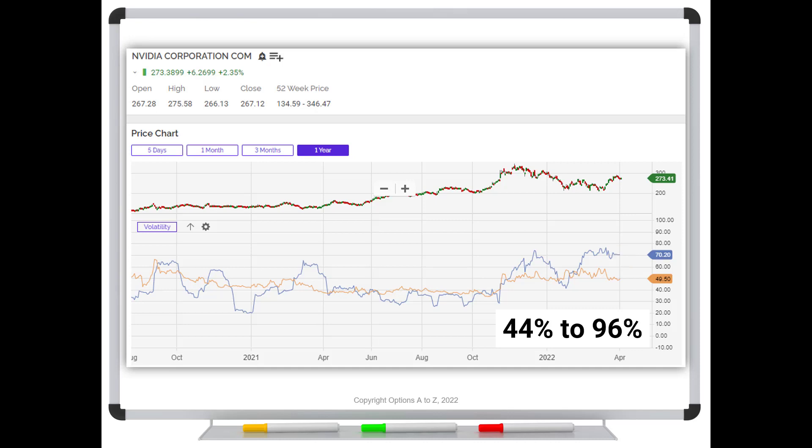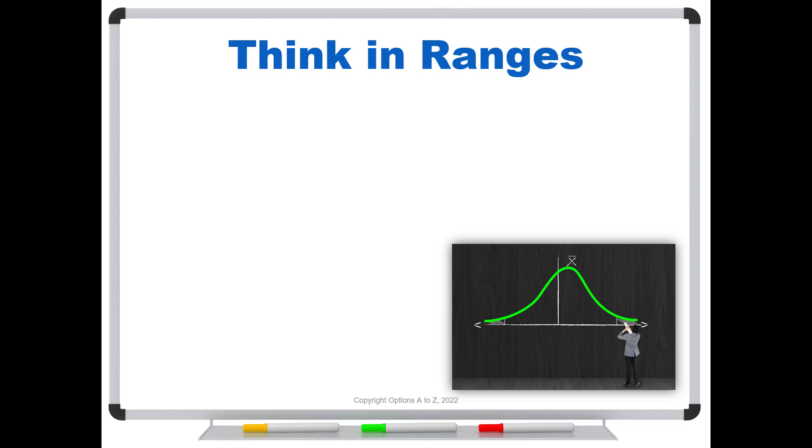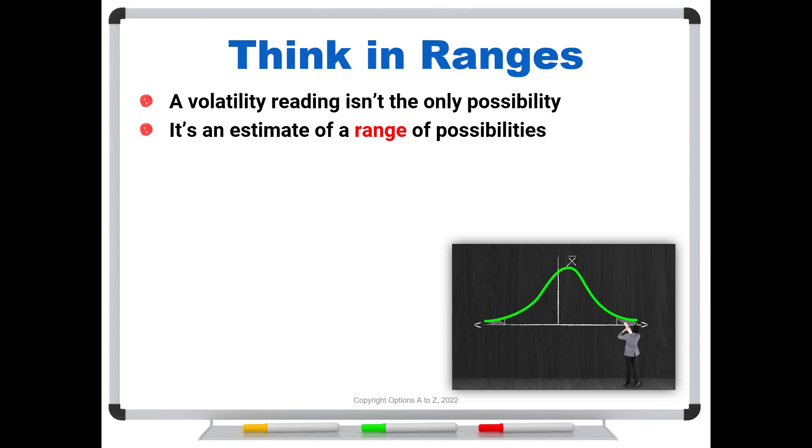So if there's nothing else that you get from this video, you want to learn to think in ranges. A volatility reading isn't the only possibility. It's an estimate of a range of possibilities. So over a 30-day sample, a lot of variation can occur. And so now you have a way, for those of you who are somewhat comfortable with the math, who could actually go and do an interval and figure that out. And if you're not, at least realize that the historic volatility readings that you're seeing are not really etched in stone. There are a range, and you need to take that into account when you're setting up your strategies.